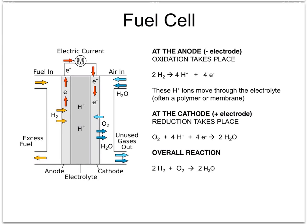Releasing four electrons. The electrons form a current which passes from the anode to the cathode, lighting a bulb for example.